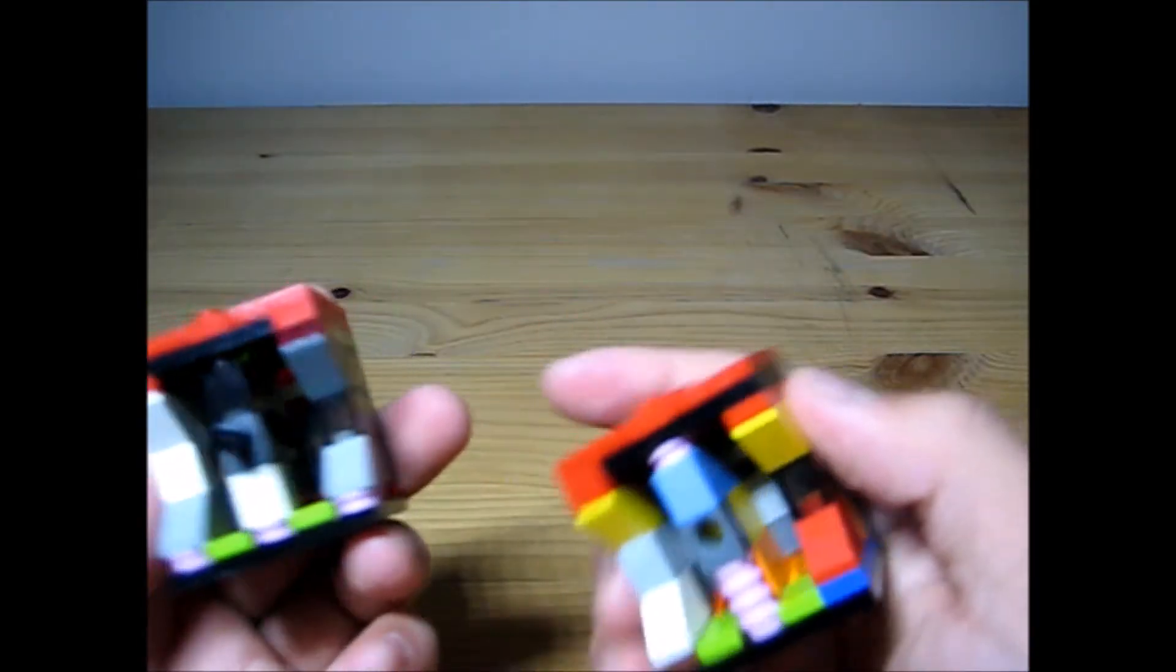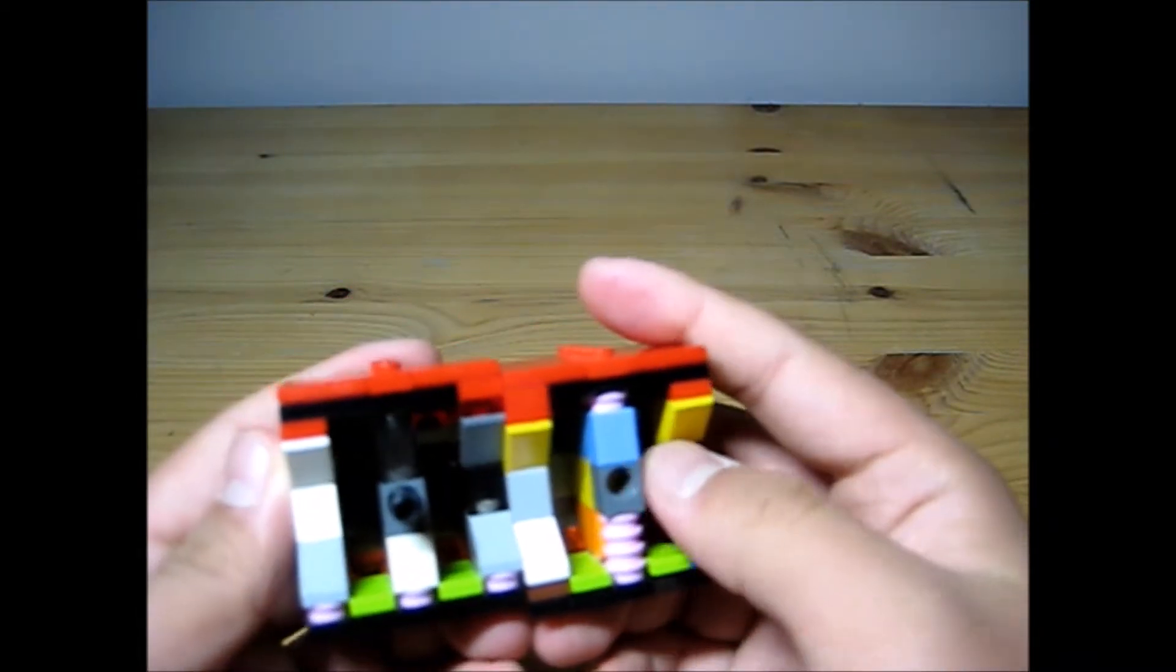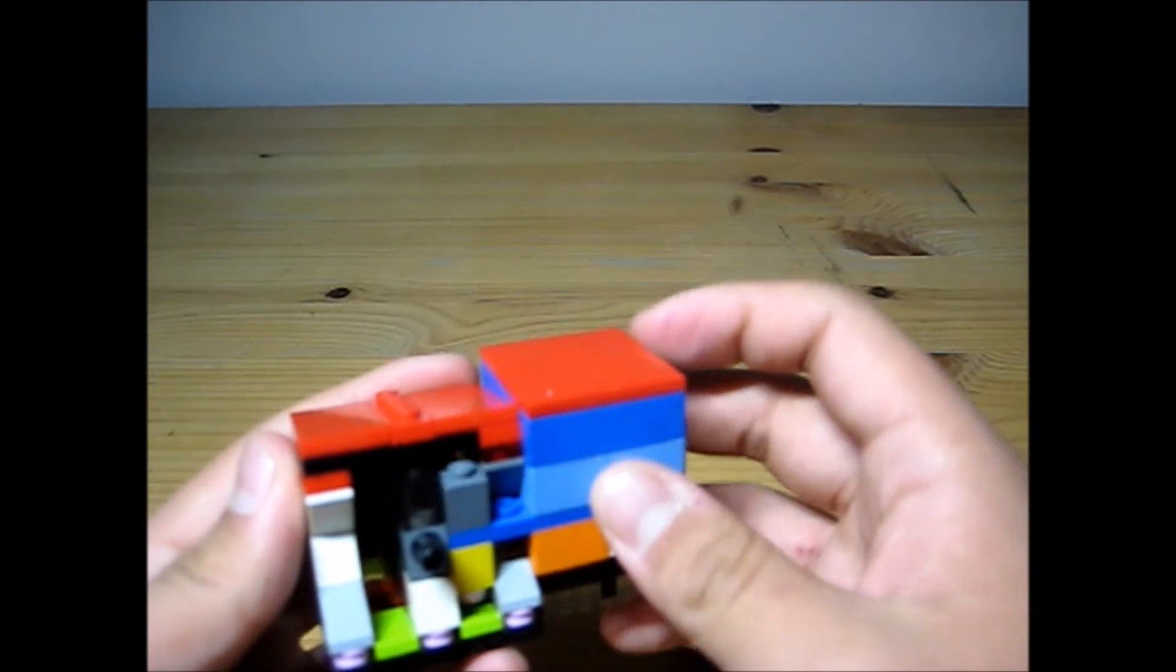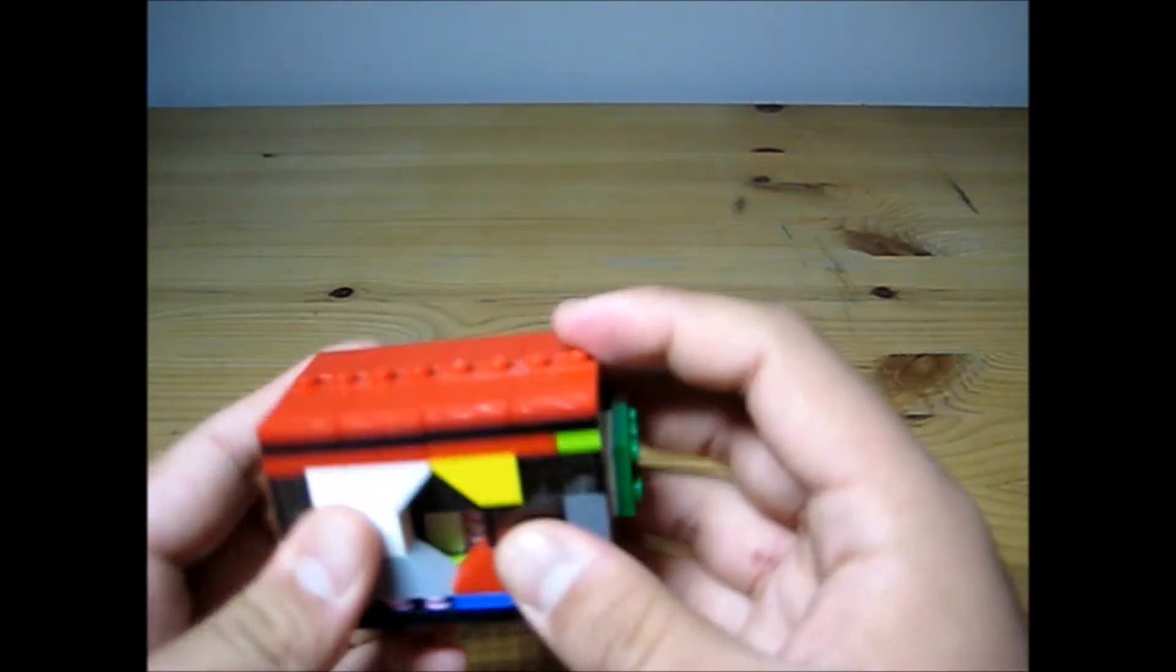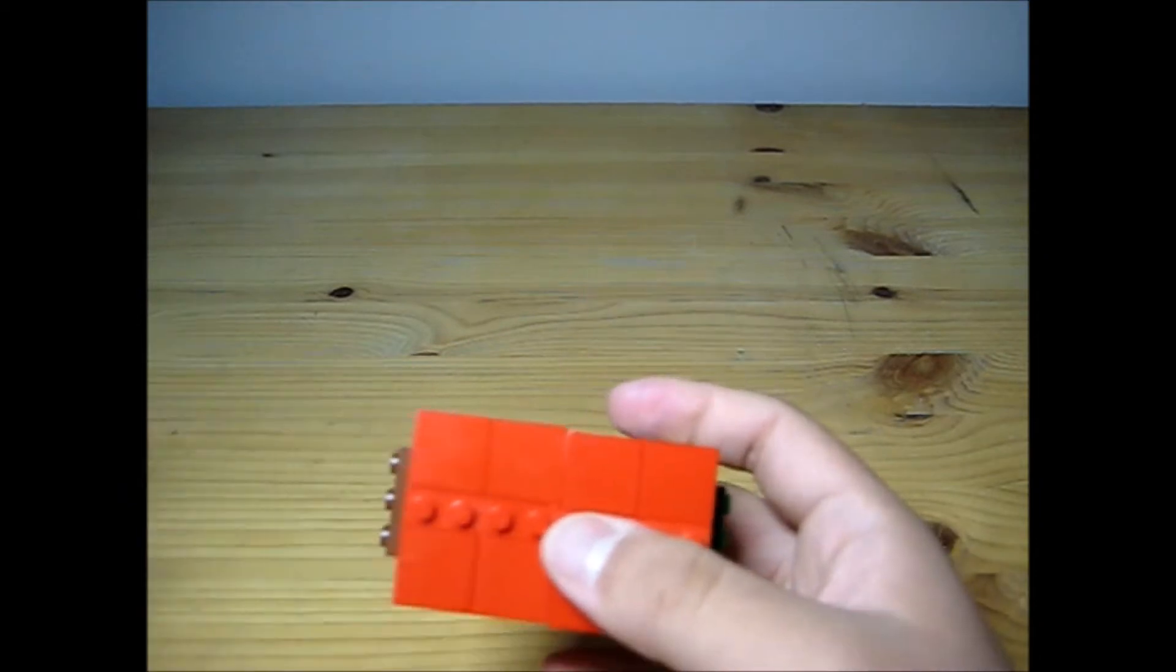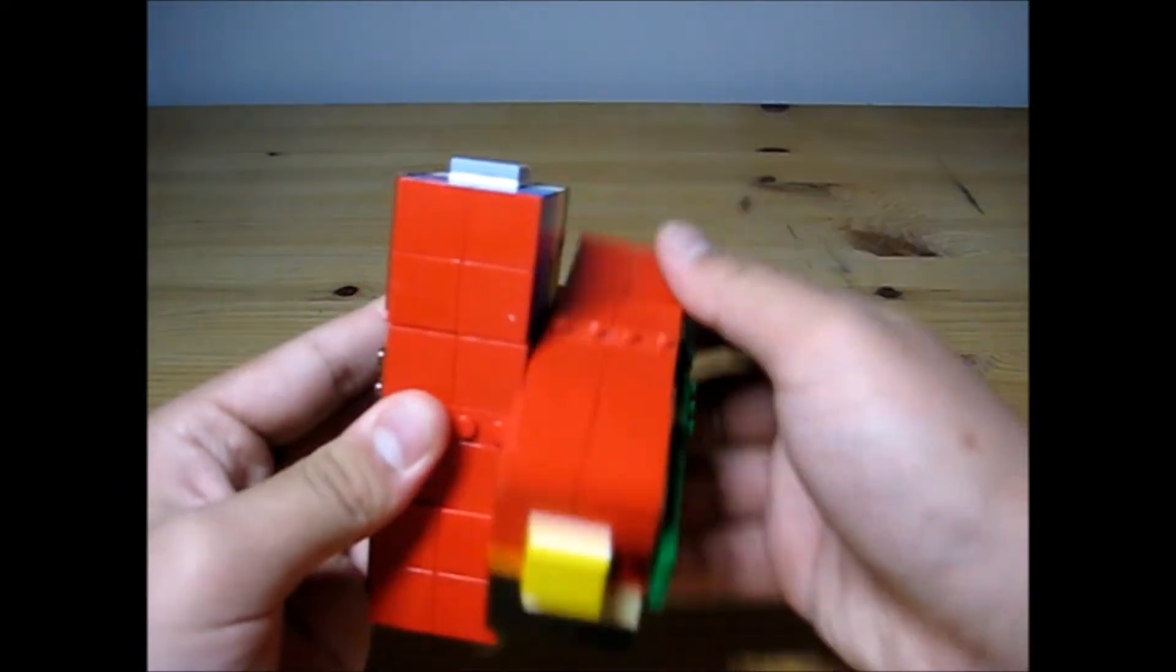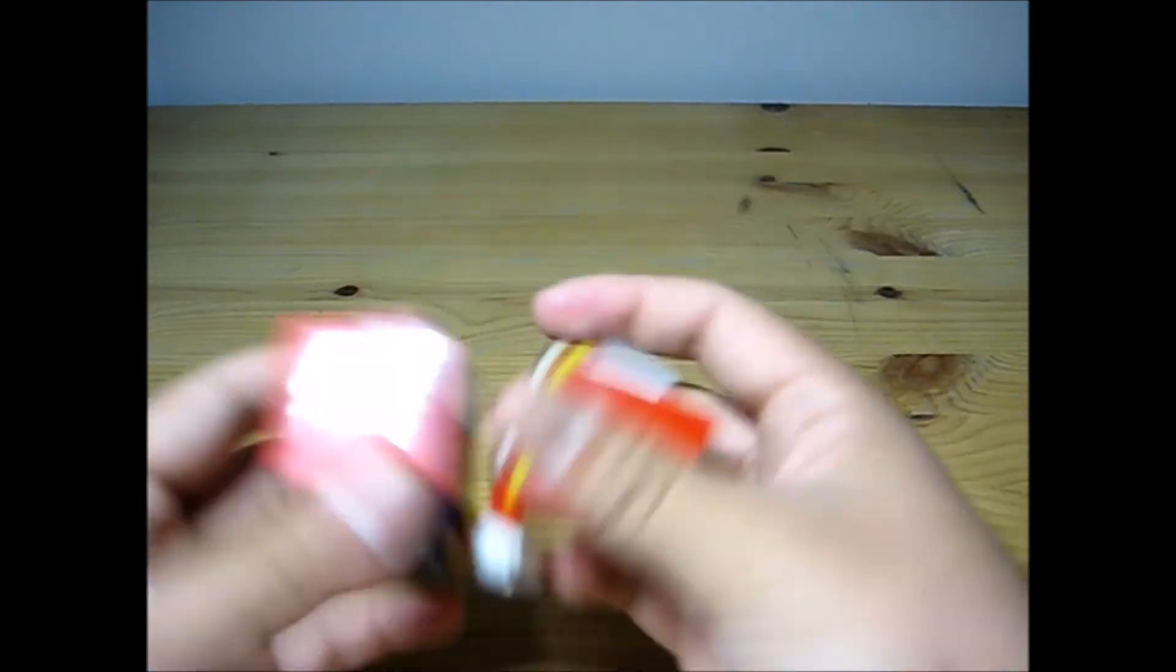There are slots in the center where the corners can fit in like this. These axles allow for the cube to turn like this, and with the corners in it looks like this.